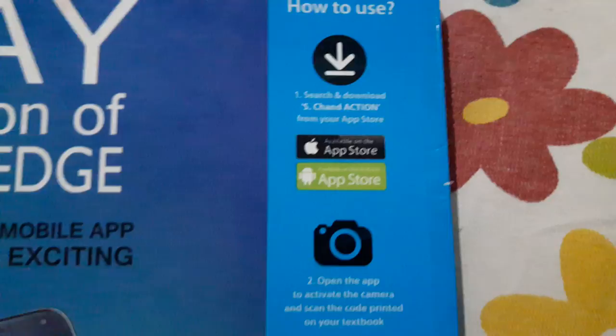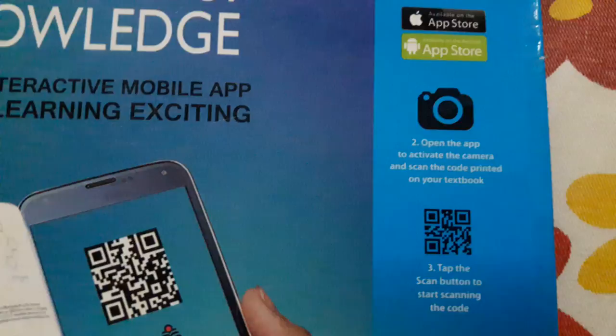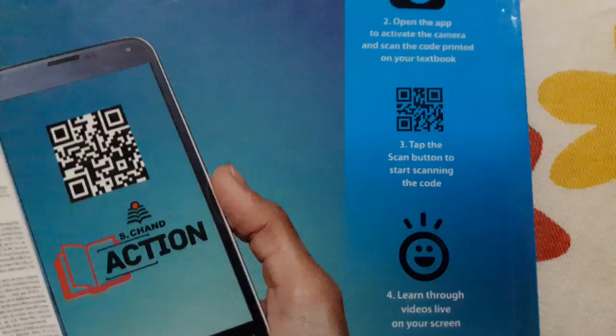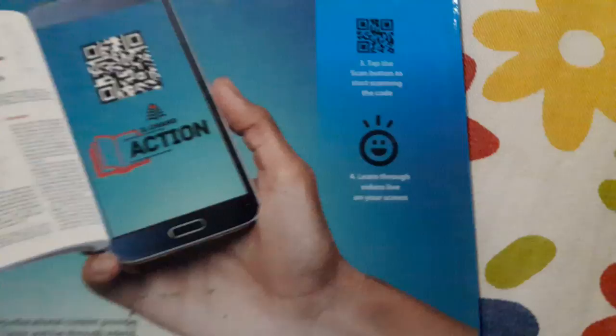Second, open the app and activate the camera and scan the code printed on your textbook. Third step, tap the scan button and start scanning the code. Fourth option is enjoy.